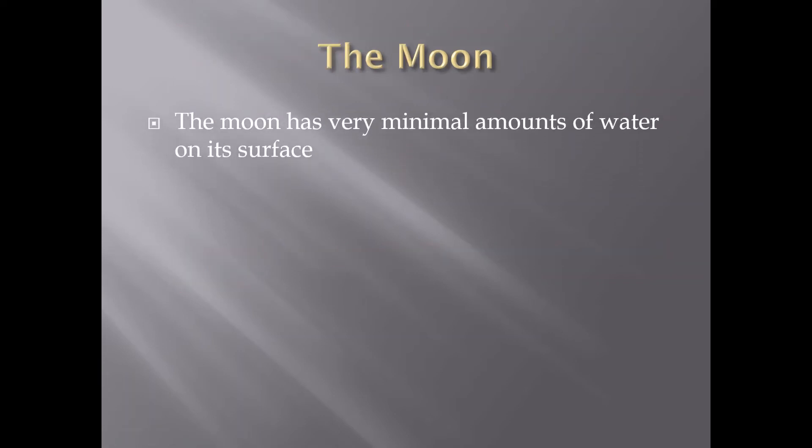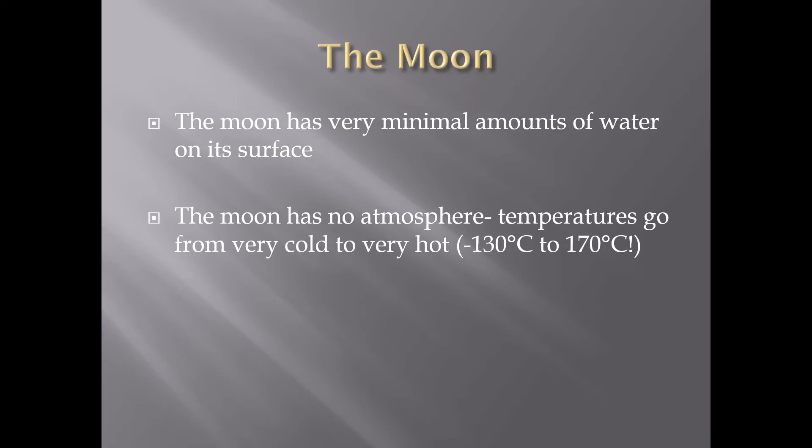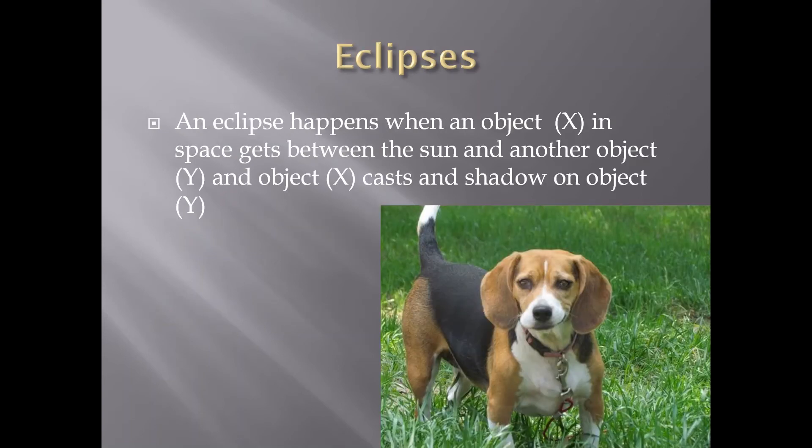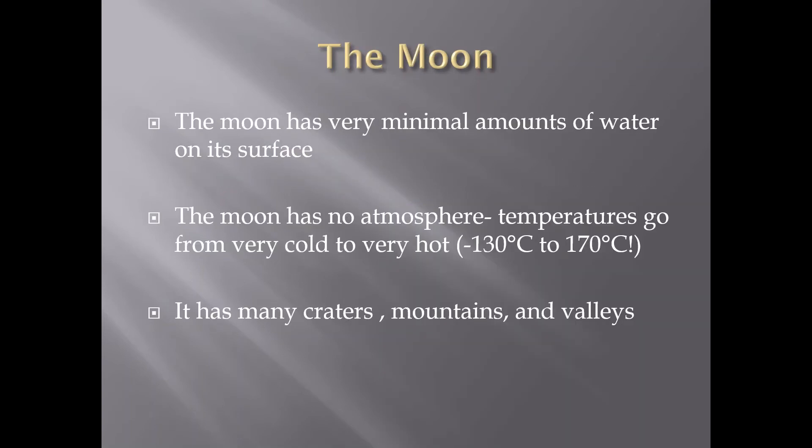So the moon has very minimal amounts of water on the surface and the moon has no atmosphere. Temperatures go from very cold to very hot, negative 130 degrees to 170 degrees Celsius. There's no atmosphere to hold in the heat, so it's very cold, very extreme and then very hot. It has many craters, mountains, and valleys. And there's another video shortly explaining some things about the moon.